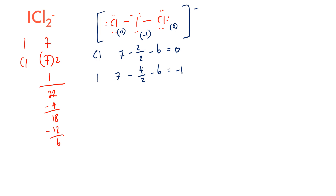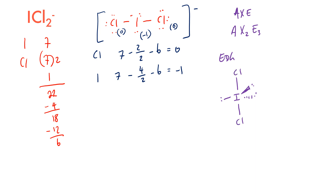Using AXE notation: A is central iodine, X₂ are the 2 chlorines, and E₃ are the 3 lone pairs on iodine. This gives an electron domain geometry of trigonal bipyramidal. The lone pairs occupy the equatorial positions, and the chlorines are placed axially above and below. The molecular geometry is therefore linear, with bond angles of 180 degrees.